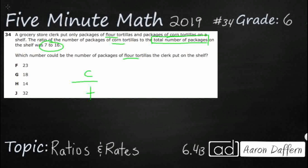Always put labels here. So corn to total is going to be 7 to 16. And what we're looking for is flour tortillas, but flour tortillas does not show up in my corn, does not show up in my total.